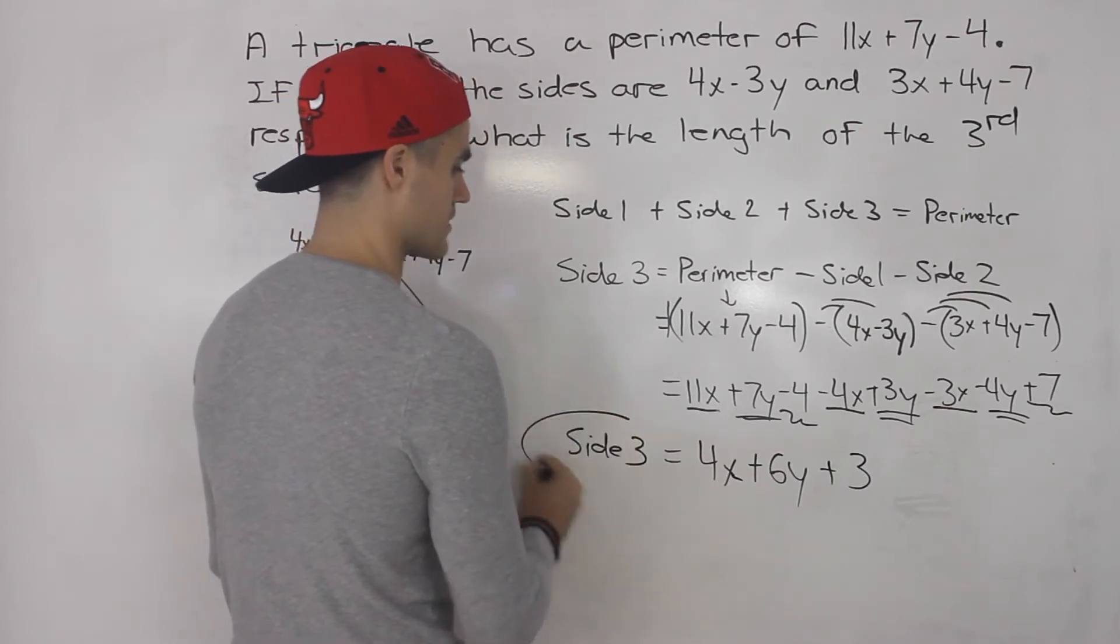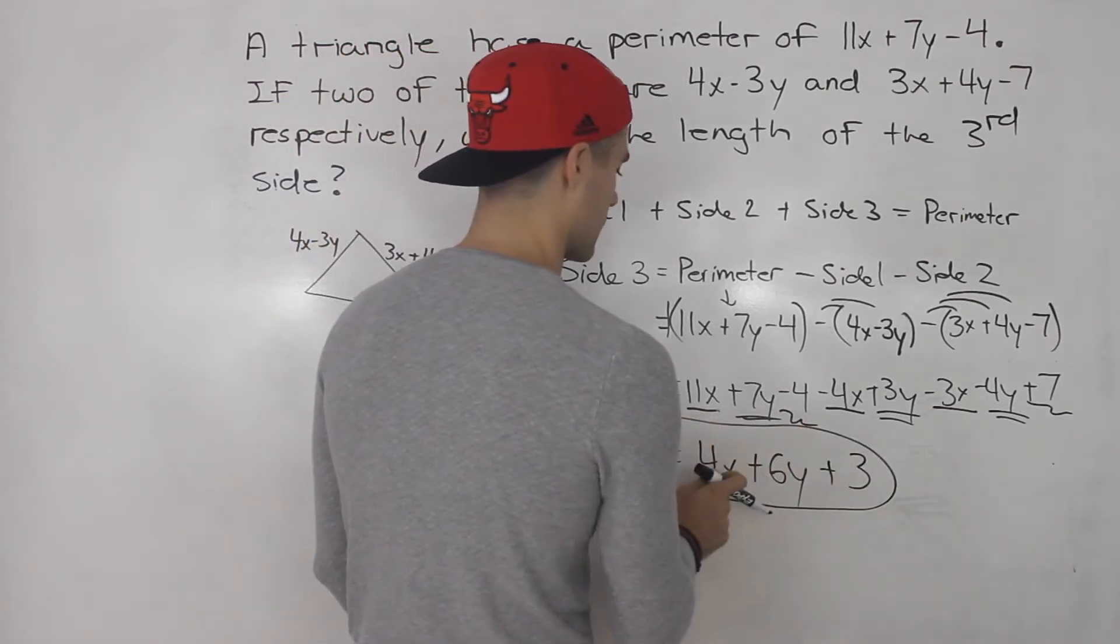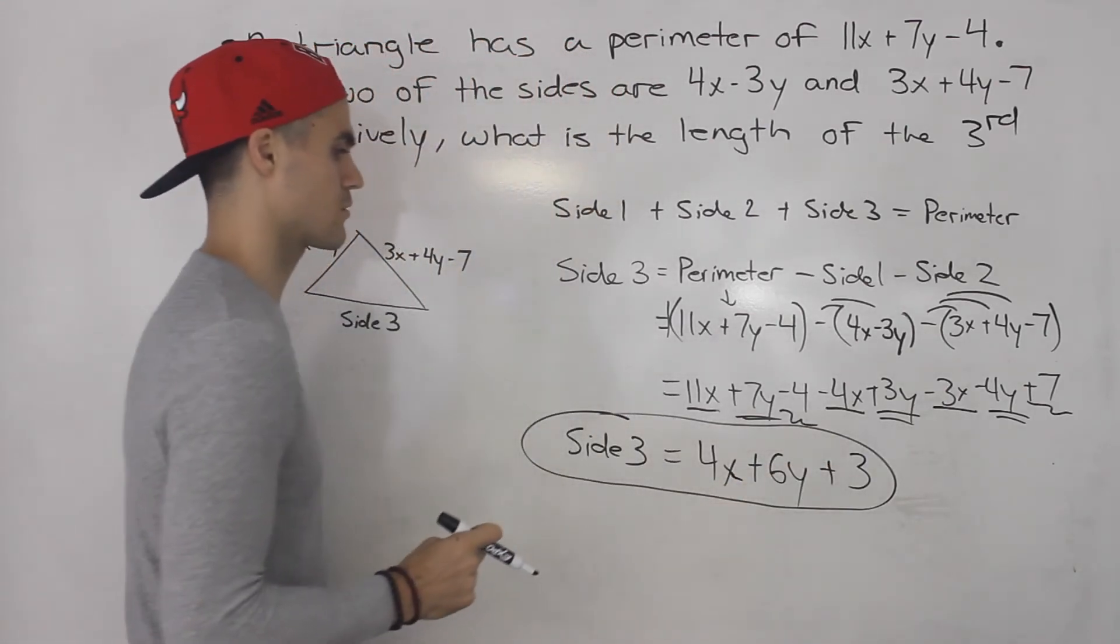So that is the expression for the third side. 4x plus 6y plus 3.